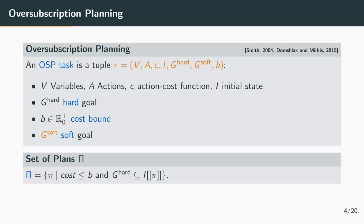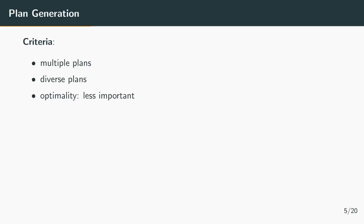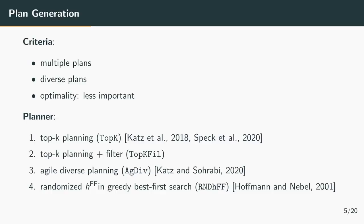Next I would like to introduce previous work which we use in our learning setup. First the plan generation. We need multiple plans which should be diverse but don't have to be optimal. We explore four different generation techniques. Three of them are variants of top-k planning which is designed to generate multiple plans. We use a top-k planner which computes the top-k plans with respect to cost but as they are often permutations of each other we also include a top-k planner with a filter which filters out these permutations. As a third variant we use an agile diverse planner which is specifically designed to generate multiple diverse plans. The fourth planner is a randomized version of HFF with greedy best-first search.